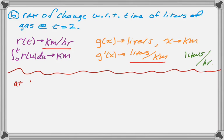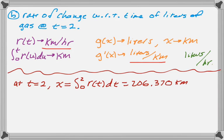So from here, it's not that tricky. So at T equals two, we know that X is the integral from zero to two of R of T, which from part A we know is 206.370 kilometers. You should have that stored somewhere on your calculator as something. So that's the kilometers we want. And then we know that we want to do R of T times G prime of X.